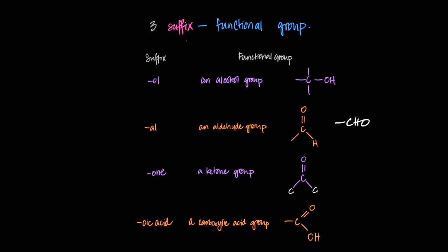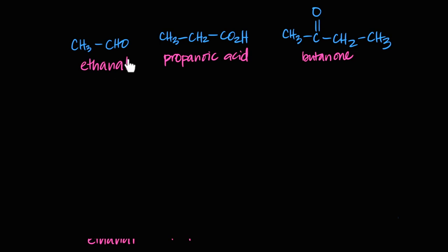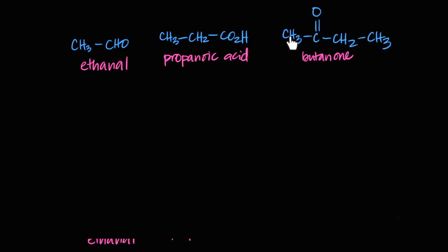Here are examples of three of these functional groups. This CHO is an aldehyde functional group, and the compound has two carbons, so it's 'eth' + all single bonds 'an' + aldehyde suffix 'al' = ethanal. Moving on: a three-carbon acid — one, two, three — so 'prop' + single bonds 'an' + acid 'oic acid' = propanoic acid. Here's a four-carbon structure: one, two, three, four — 'but' + single bonds 'an' + ketone in the middle 'one' = butanone.